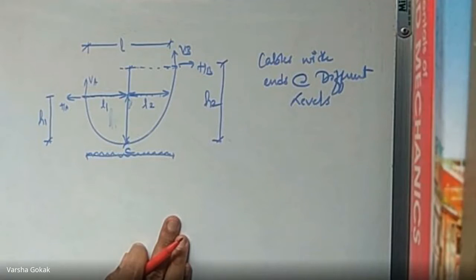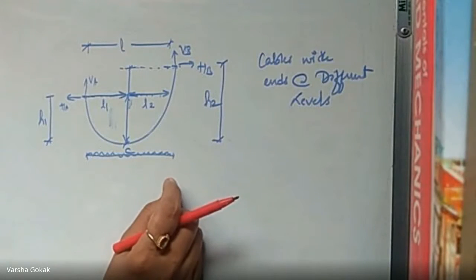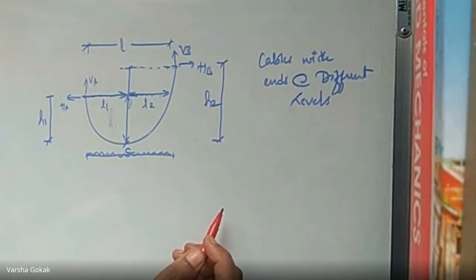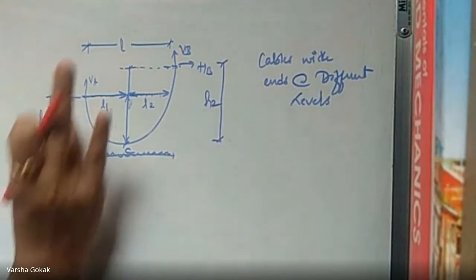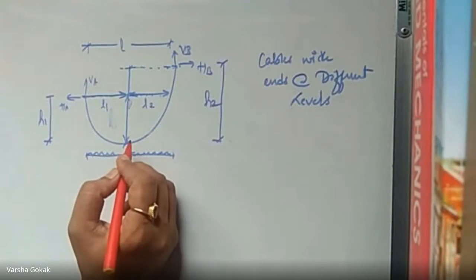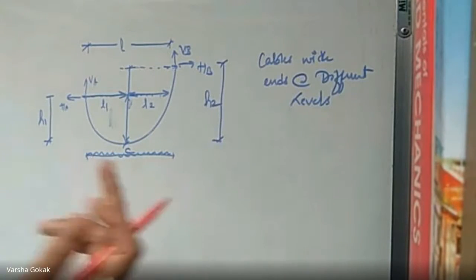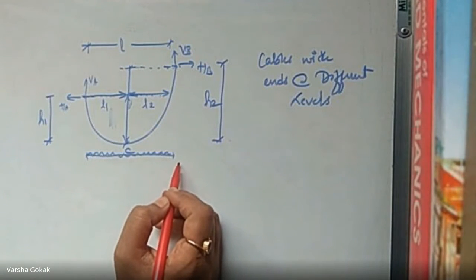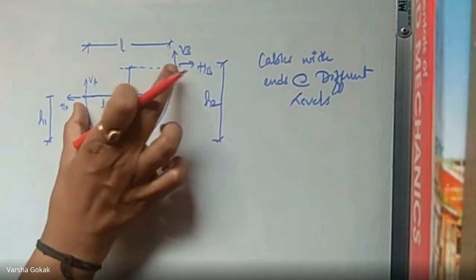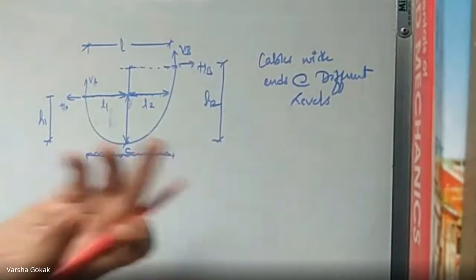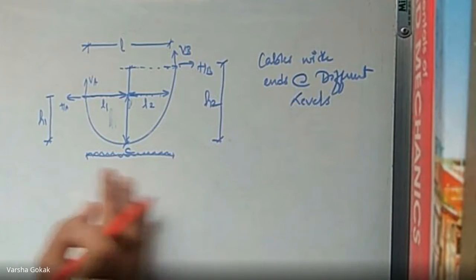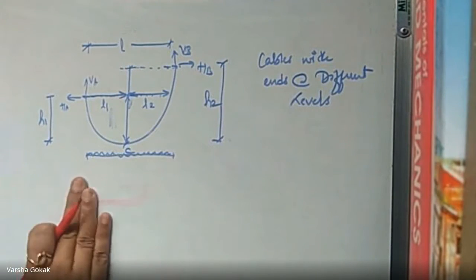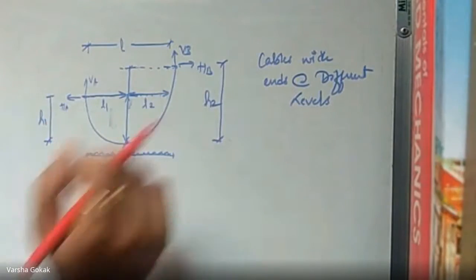Hello, good morning all. Today we will be taking up a numerical on cables with ends at different levels. Last class we covered numericals with point loads, then UDL throughout. Now we have a case where the ends are at different levels. Previously, both ends were at the same level, and now we will go ahead with cables at ends at different levels.